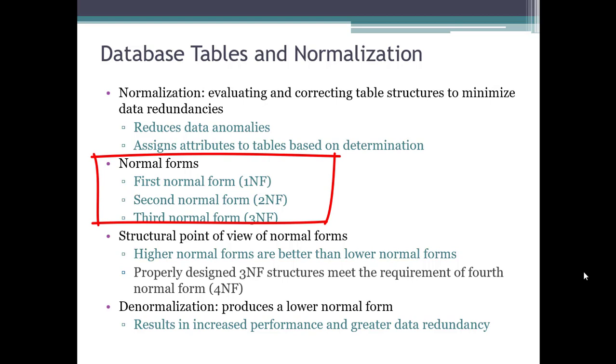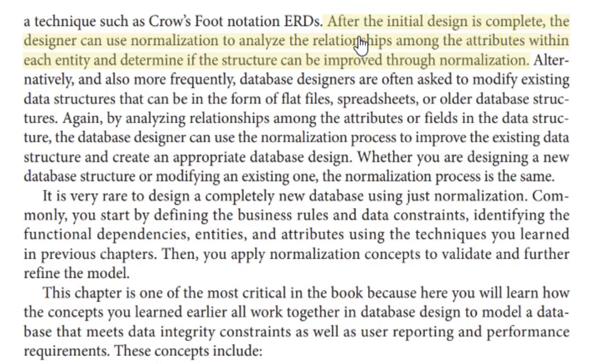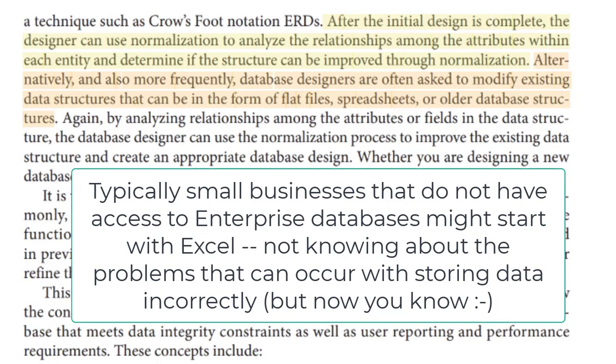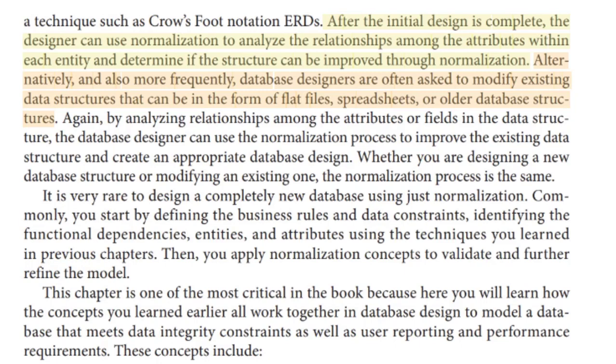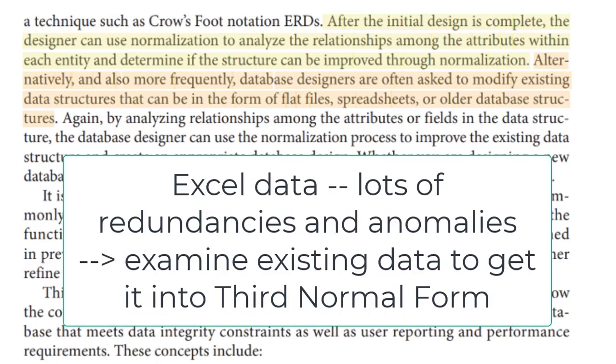You see here three types of normal forms: first, second, and third. There's actually more, but for most business purposes, if you get to third normal form, you have eliminated most data redundancies. The author says after the initial design is complete, you will normalize and analyze the relationships. Also more frequently, database designers are asked to modify existing data structures from spreadsheets or old databases. That is my experience. I've been asked from businesses that have used Excel to store their data inefficiently and to pull into Access to automate some things.